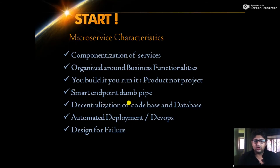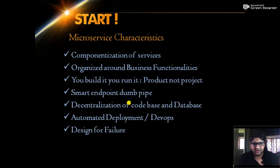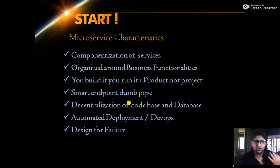Taking a holistic view, I can break down microservice characteristics into seven parts: first, componentization of services; second, organize around business functionalities; third, product not project — the 'you build it, you run it' principle; fourth, smart endpoint, dumb pipe; fifth, decentralization of code base and database; sixth, automated deployment pipelines and DevOps culture; and seventh, design for failure.